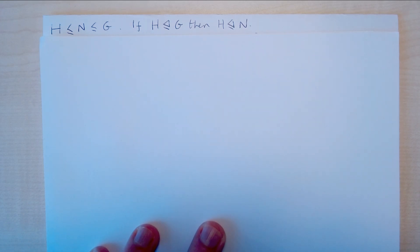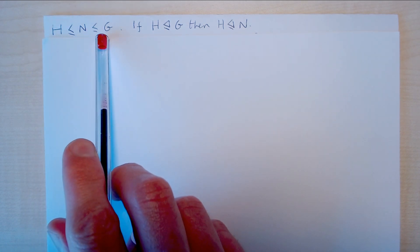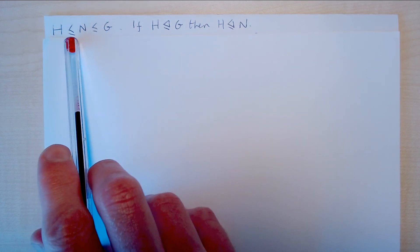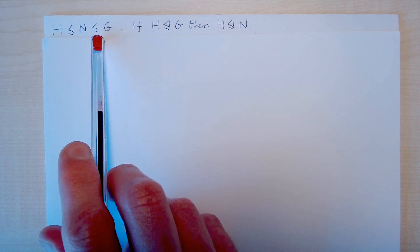Okay, just have a little group theory result for you today. So if we consider this chain of subgroups, H is a subgroup of N and N is a subgroup of G.